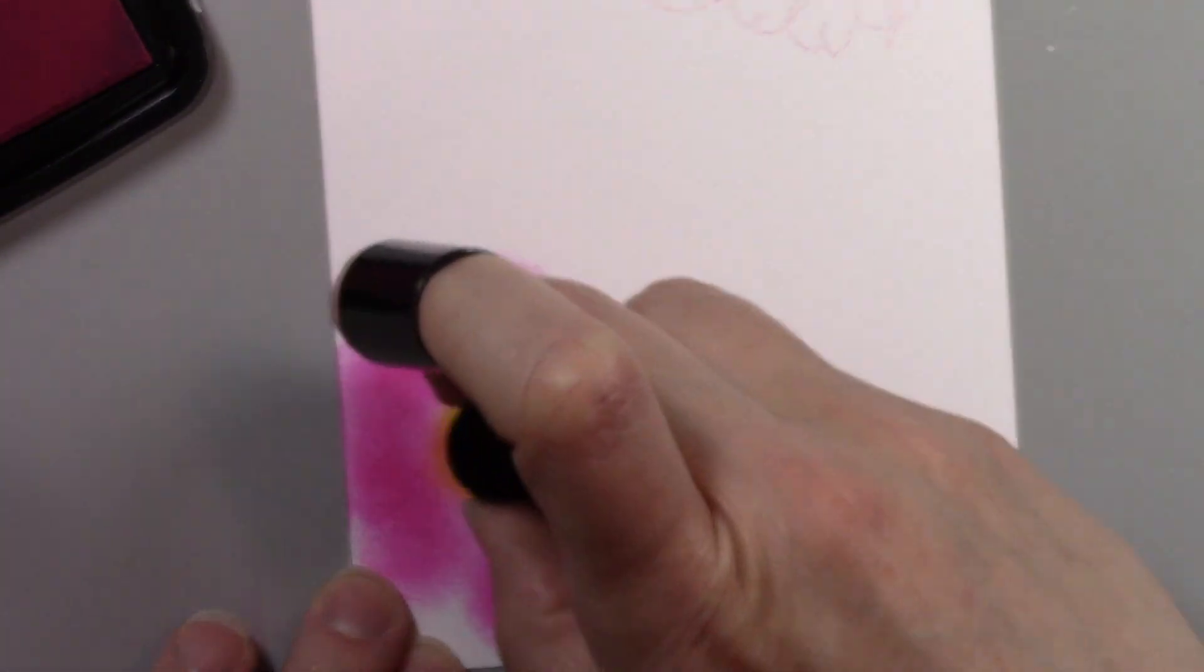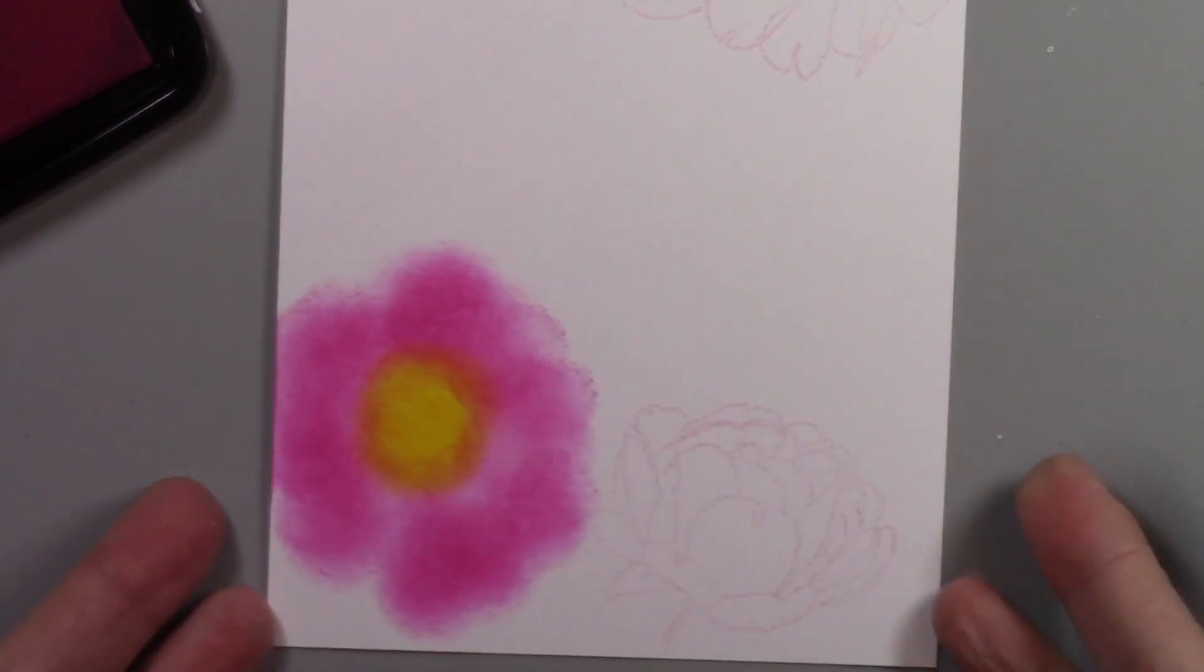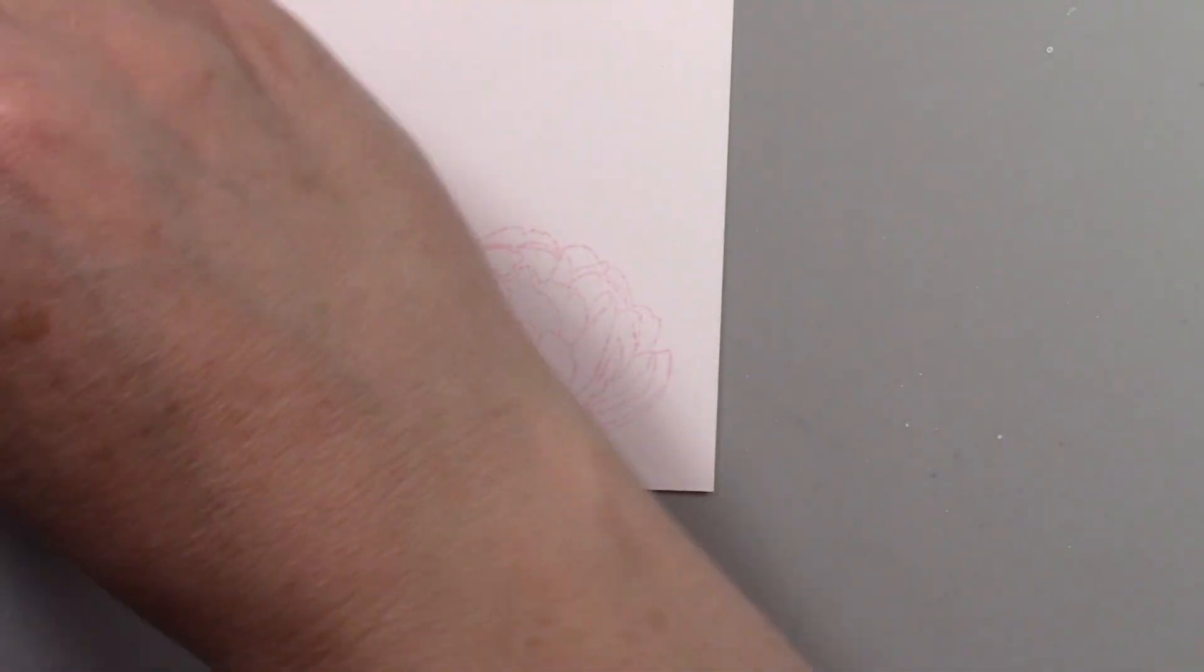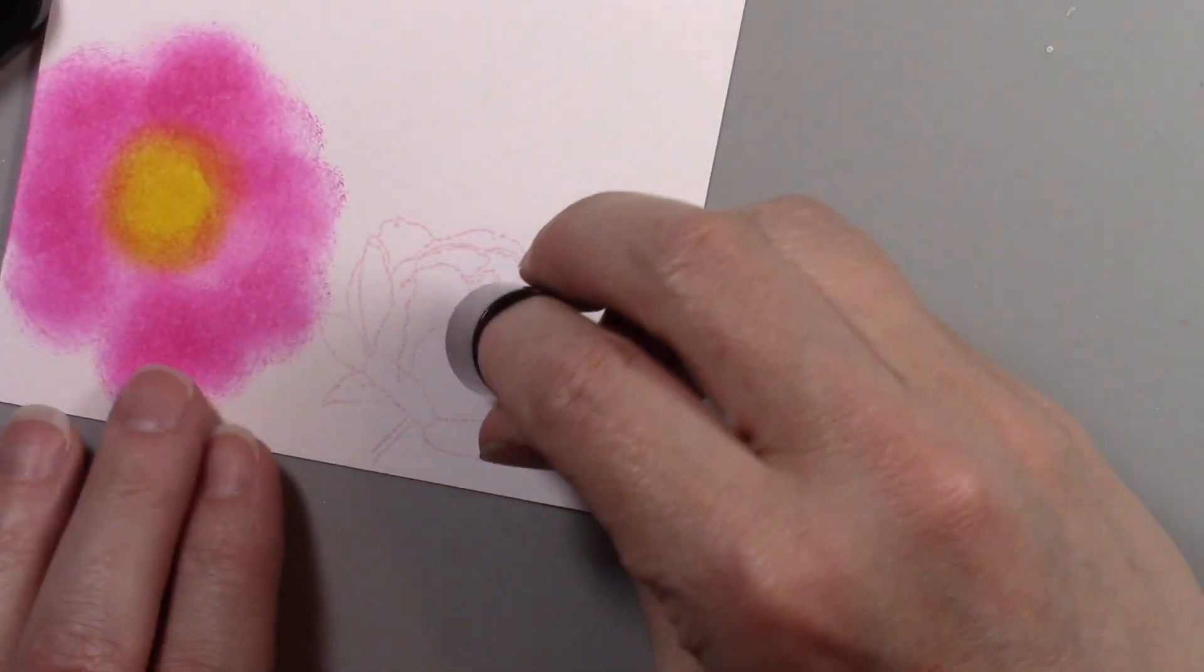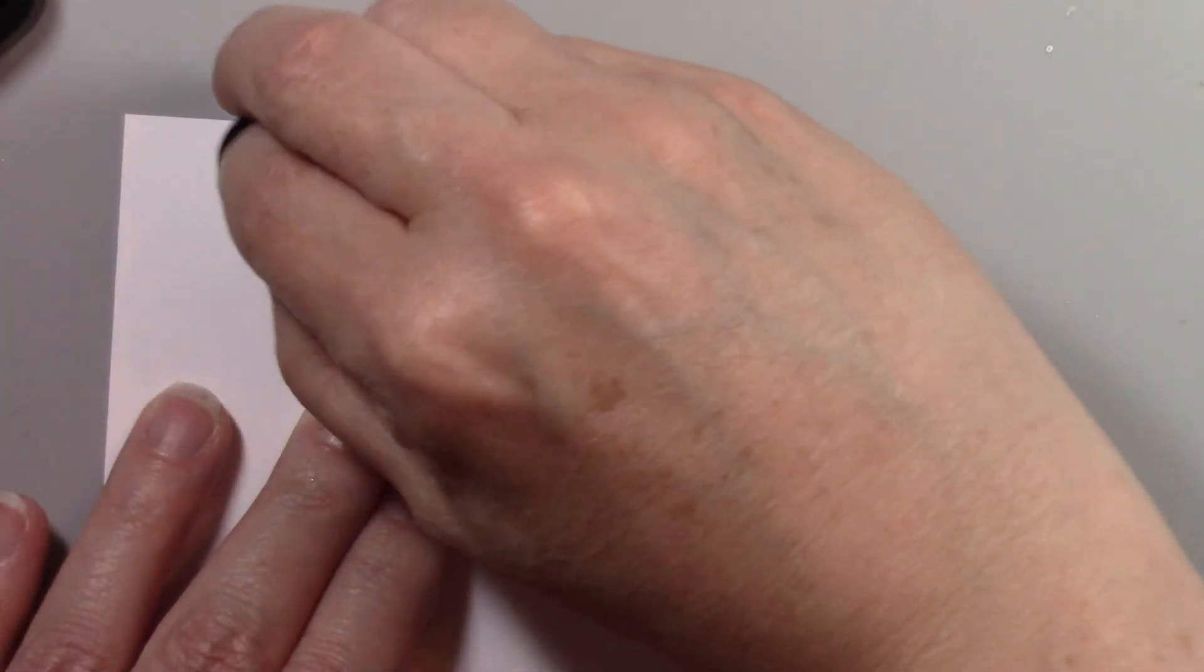I'm not concerned if I go out of the lines at all because what's going to happen when you add your vellum layer is the vellum layer is going to define your flowers. This is just a guideline for where I want to put ink.